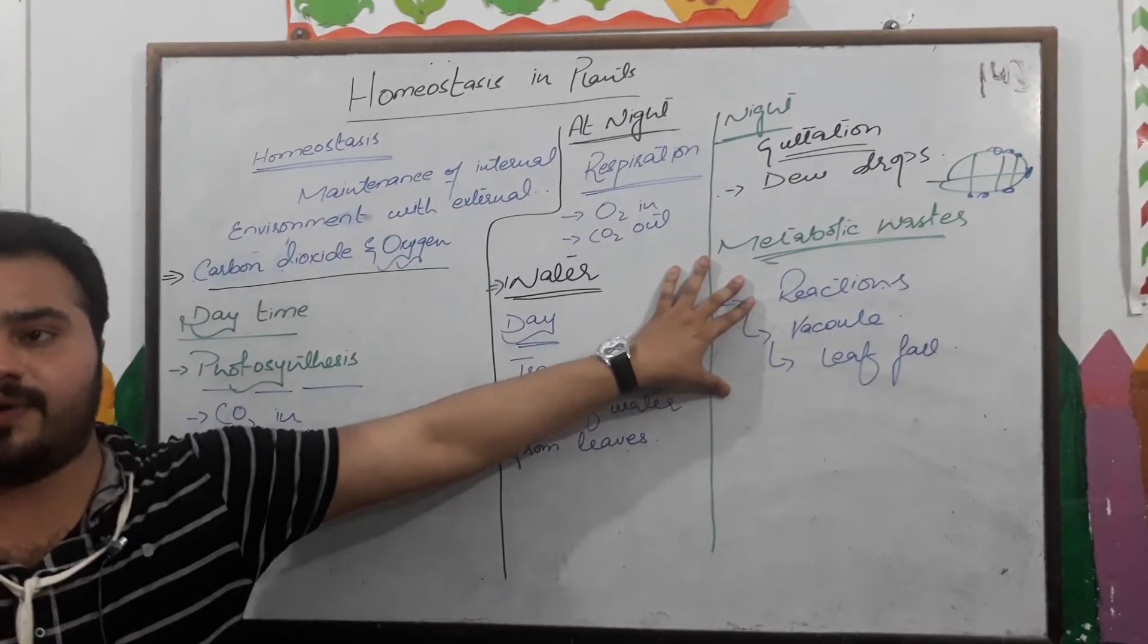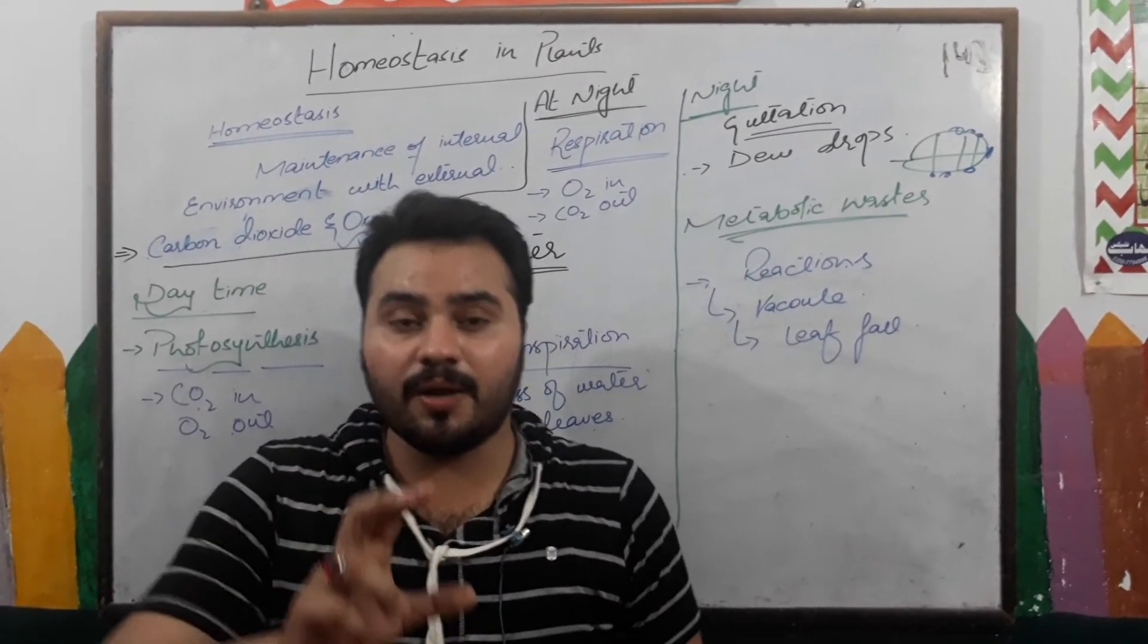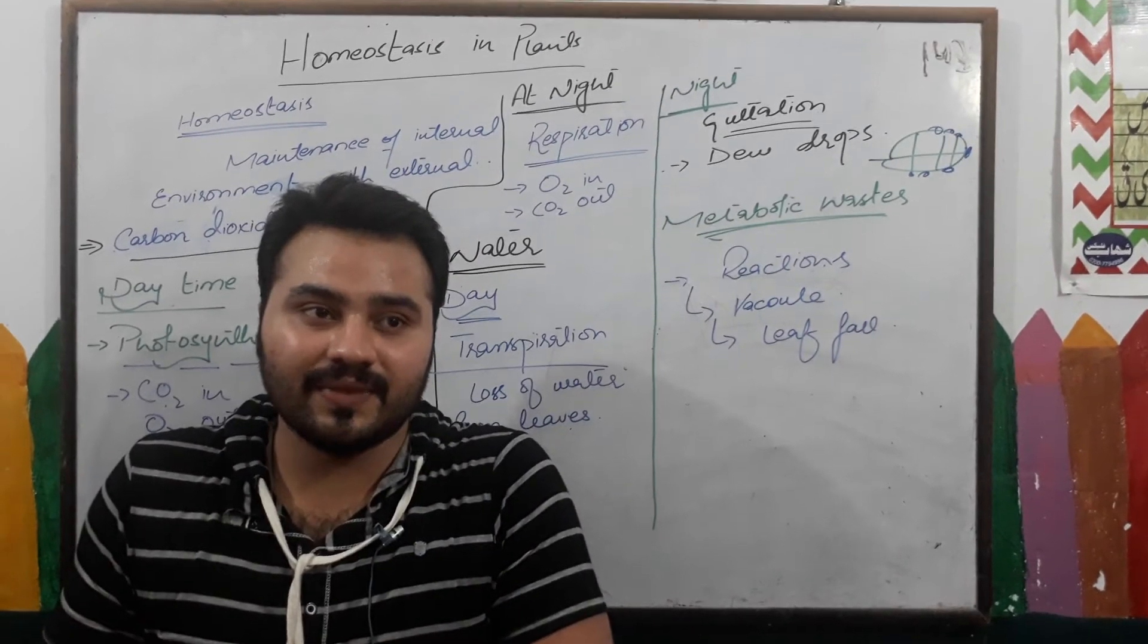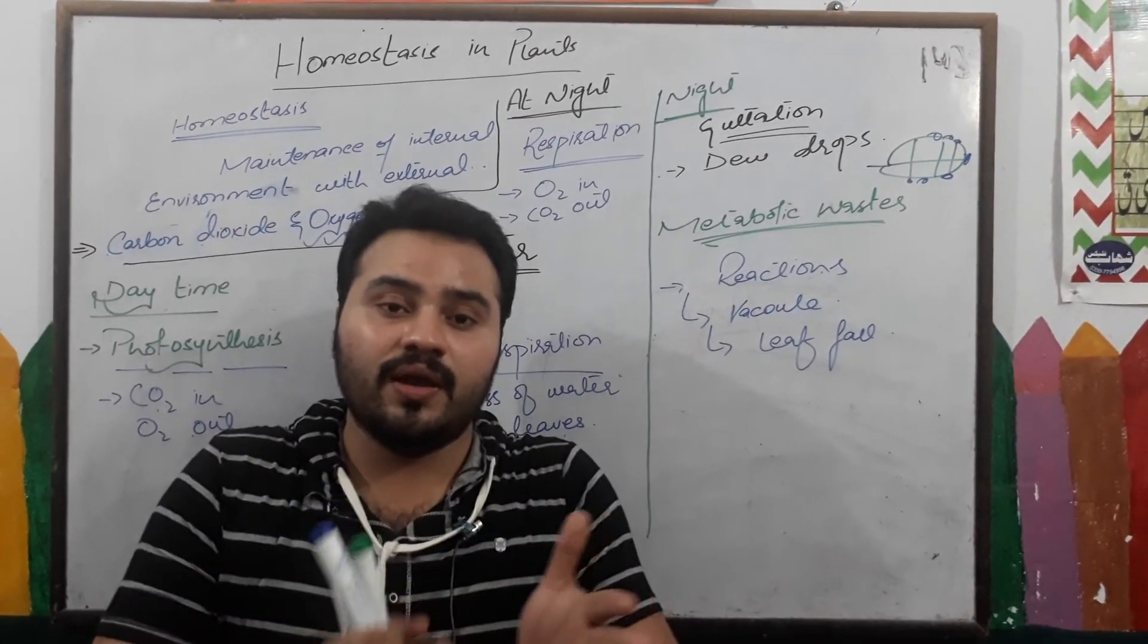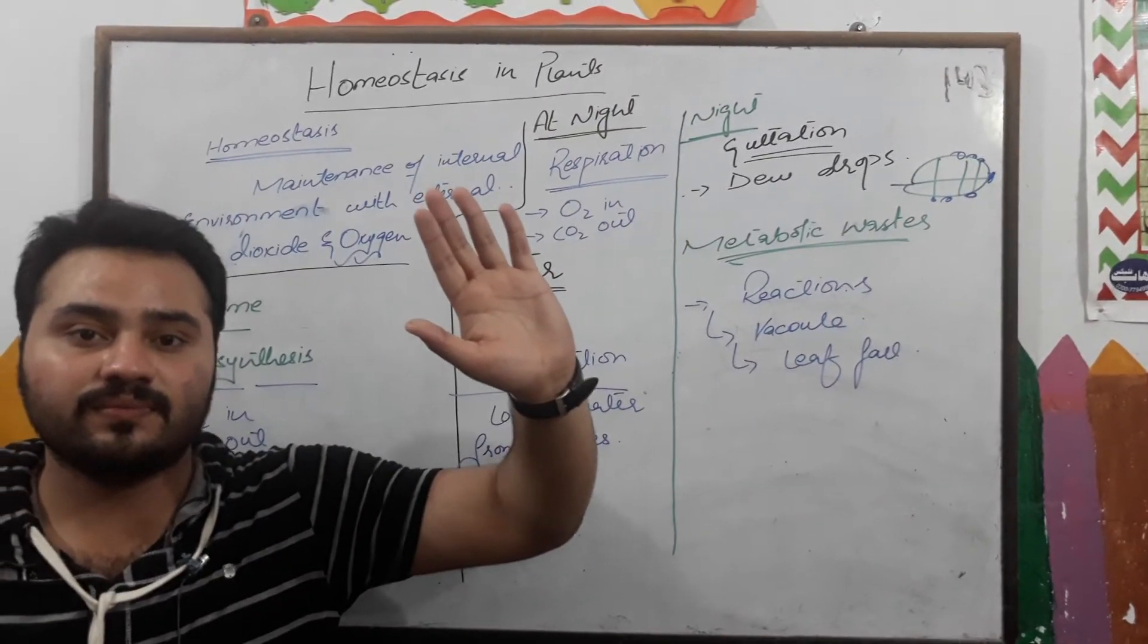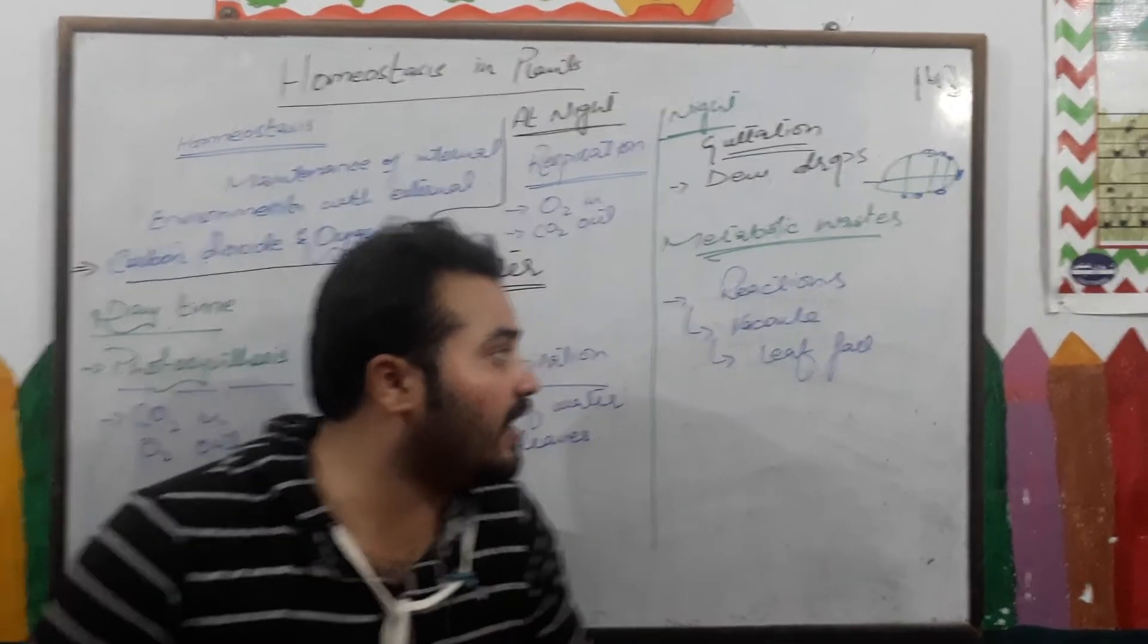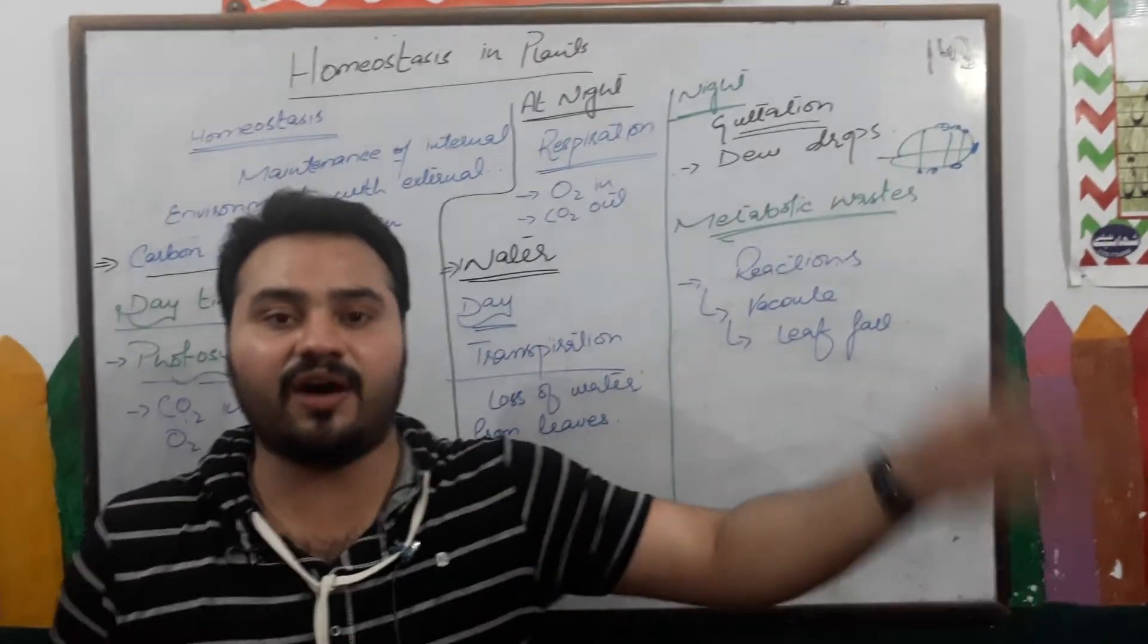Last step is metabolic waste. Plants are doing many kinds of reactions. In these reactions, some compounds are formed which are toxic or not usable for the plants. But plants do not have any organ to eliminate them. So in that scenario, plants can store them in their vacuoles. And annually, plants can fall their leaves. This is homeostasis - excess metabolic waste is stored in the vacuoles, and after a year, plants fall their leaves to expel out the metabolic waste.